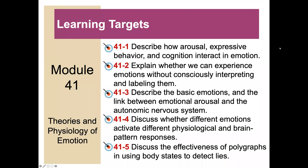We have quite a few learning targets, but we'll try to get through them rather quickly. The first is to describe how arousal, expressive behavior, and cognition interact in emotion. The second is to explain whether we can experience emotions without consciously interpreting and labeling them. Also, describe the basic emotions — you may have learned some from the movie Inside Out, which is actually quite accurate — and the link between emotional arousal and the autonomic nervous system.